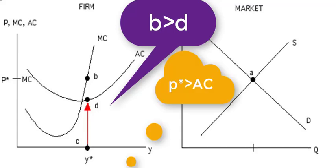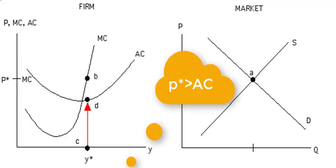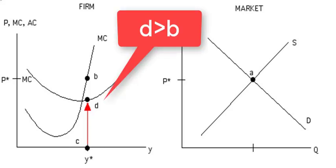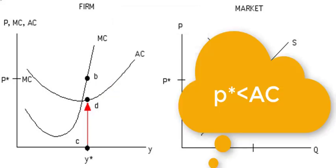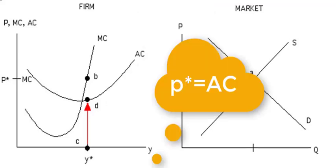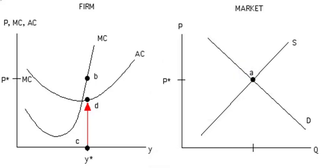If D is greater than B, P star is less than AC at Y star, then the firm is having a loss. Finally, if B is equal to D, P star is equal to AC at Y star, then the firm is earning zero economic profits and is in equilibrium.